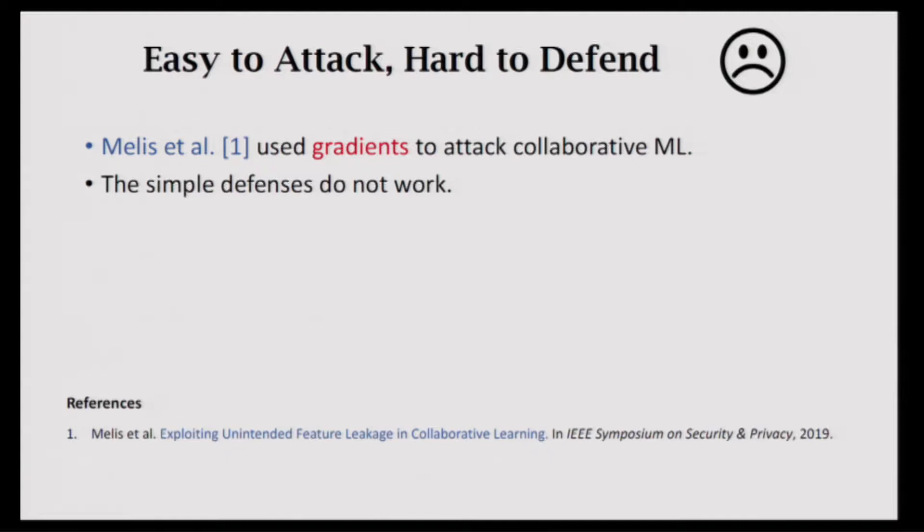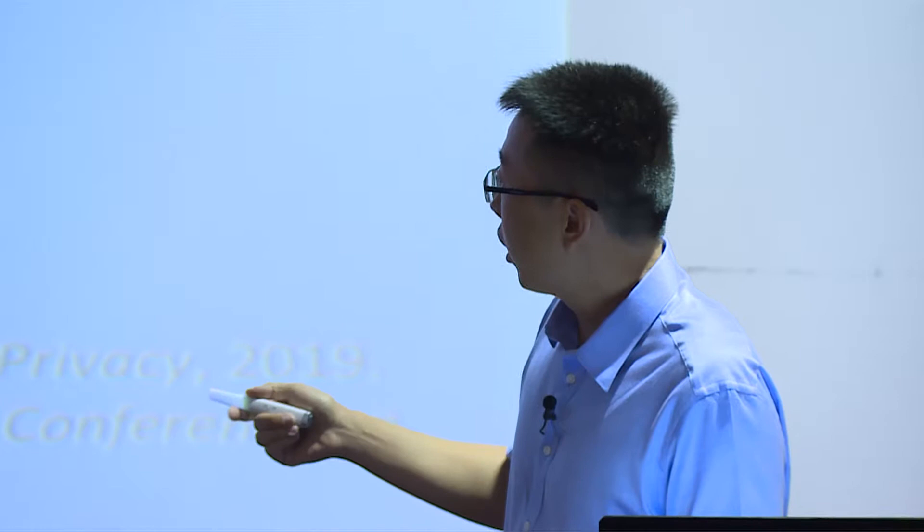Unfortunately, the attacks are easy to conduct but very hard to defend. One paper uses gradients to attack collaborative machine learning and shows simple defenses do not work—this attack is passive; they don't manipulate data or gradients, they just behave as normal participants. An earlier work by my colleagues uses model parameters to attack collaborative learning, using a GAN to generate other users' data. They also show simple defenses do not work. However, this attack may be easier to defend because it's active—they must manipulate the gradients and send fake information to the server, so it's possible to detect and defend against it.